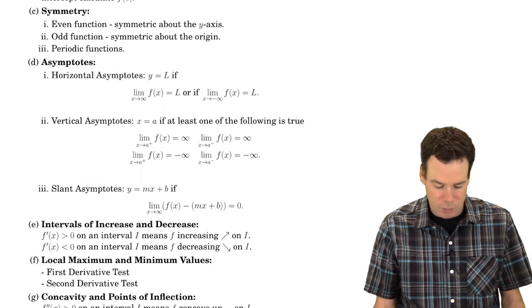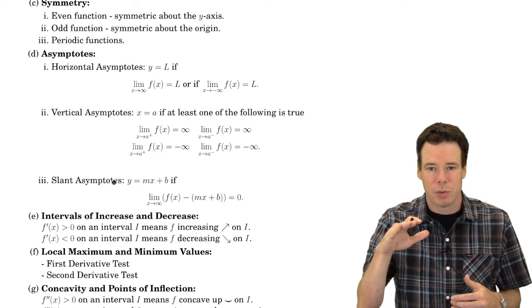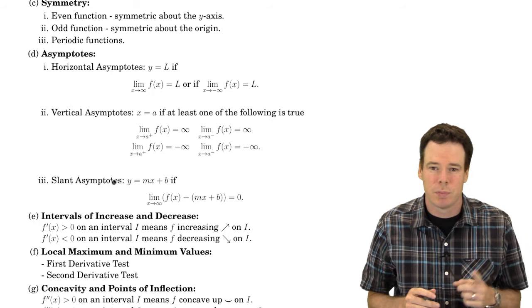Now one kind of asymptote we haven't talked about so far is a slant asymptote. And we'll see an example of this in a little bit. But the point here is that perhaps the function is not heading towards a particular number as you head off to either negative infinity or positive infinity.